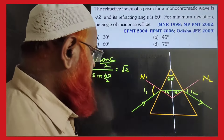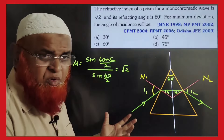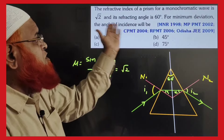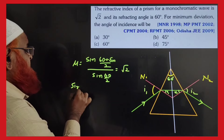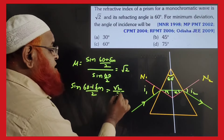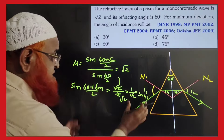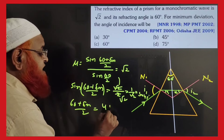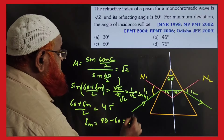For angle of minimum deviation with prism angle A = 60° and mu = √2: using mu = sin((A + delta_m)/2) / sin(A/2), we get √2 = sin((60 + delta_m)/2) / sin30 = sin((60 + delta_m)/2) / (1/2). So sin((60 + delta_m)/2) = √2/2 = sin45°, giving 60 + delta_m = 90°, so delta_m = 30°.